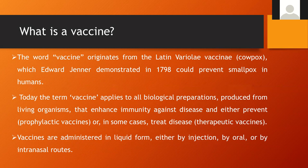The word vaccine originates from the Latin 'variola vaccinia,' which is cowpox, which Edward Jenner demonstrated in 1798 could prevent smallpox in humans. Today, the term vaccine applies to all biological preparations derived from living organisms that enhance the immunity against another disease. Vaccines can be used either as a prophylactic vaccine to prevent disease or as a therapeutic vaccine to treat certain diseases.